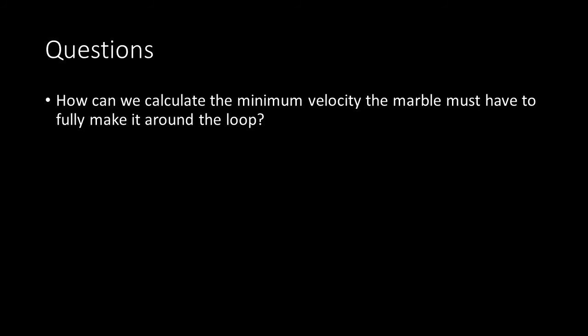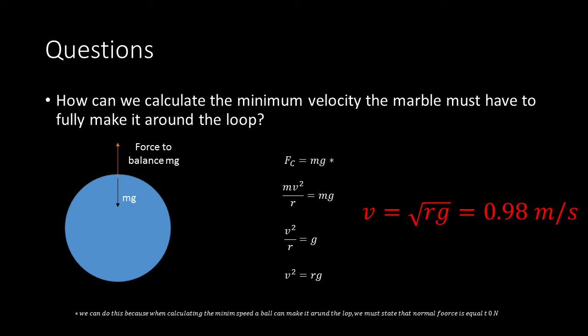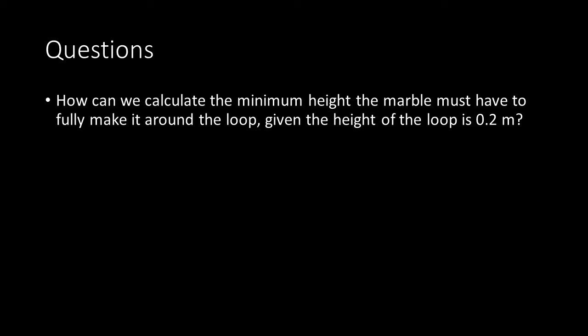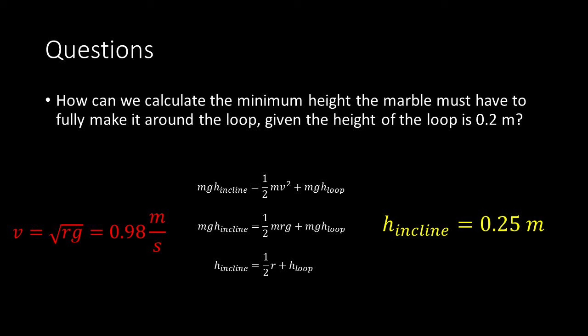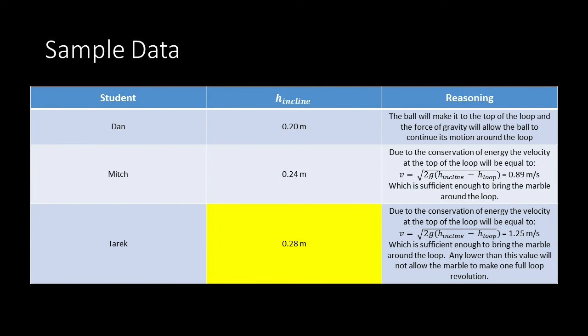How can we calculate the minimum velocity the marble must have to fully make it around the loop? The minimum velocity is the square root of rg, which for our 0.2-meter loop equals 0.98 m/s. The key for deriving this is that we must set the normal force equal to zero. To find the minimum starting height given a 0.2-meter loop, substitute v = sqrt(rg) back into the energy conservation equation and solve for h of the incline, giving 0.25 meters. Mitch was numerically closest, but since Tark's height made it fully around, we give it to Tark.